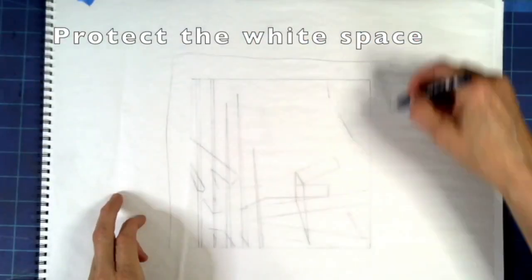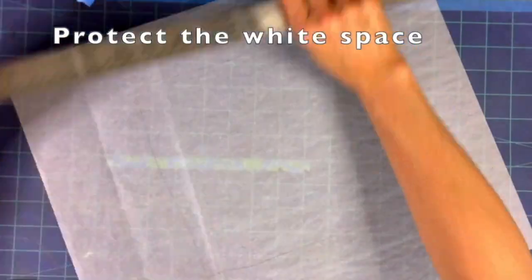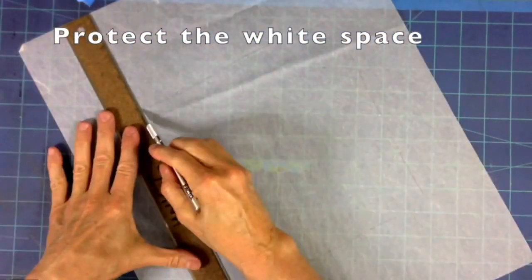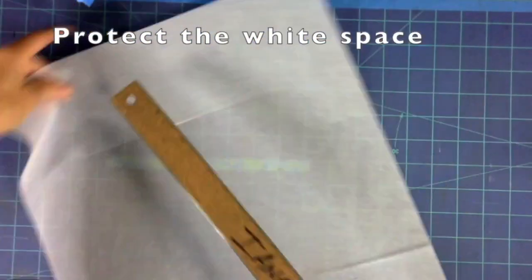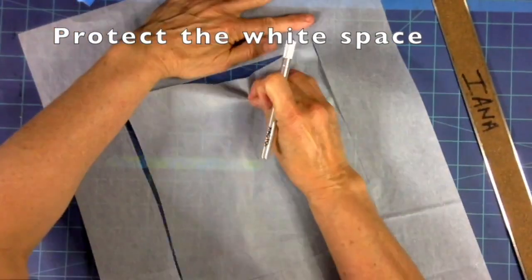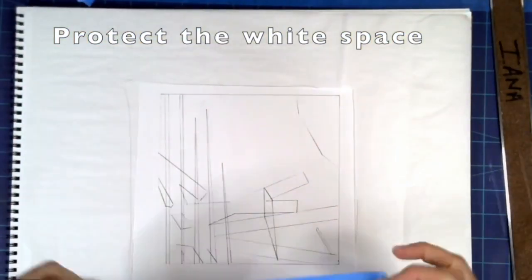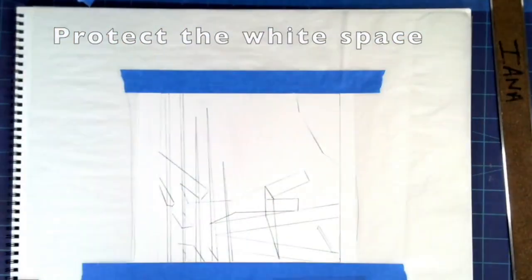What I'm doing here is I'm taking a scrap piece of paper and cutting a window bigger than my design so that I can cover up the white space. I'll put tape right up against the edges of the lines and that will help keep my white space clean.